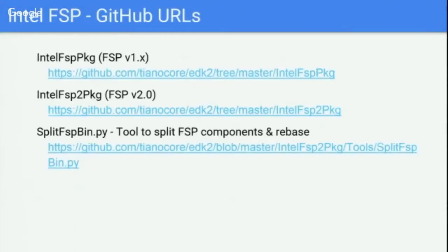The GitHub URLs for the packages are in the Tianocore EDK2 repositories, including the IntelFsp2Pkg. A Python tool was mentioned for splitting the FSP binary, and a rebasing capability was added to it—previously you needed the BCT tool to rebase. Now you can rebase to a different address post-build using this simple Python script, which is already available.